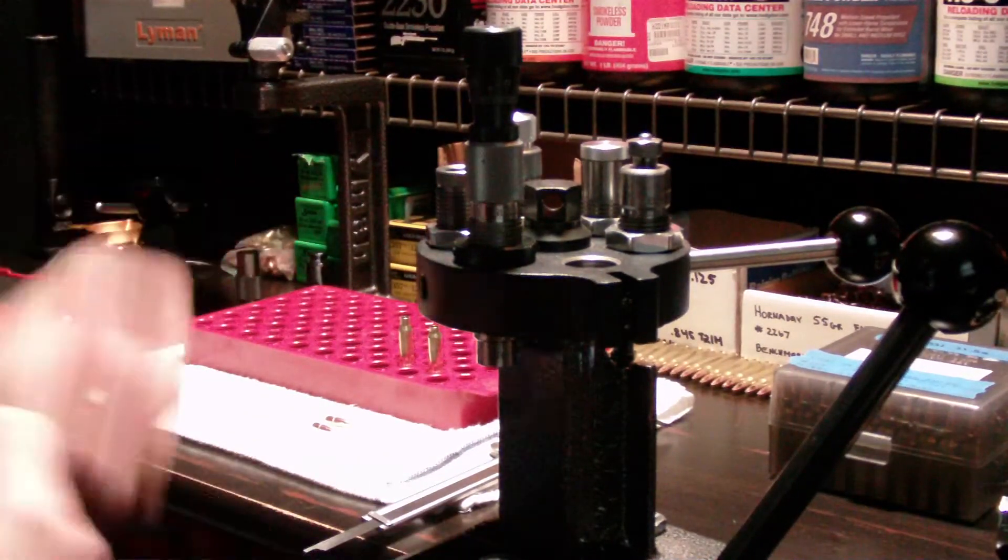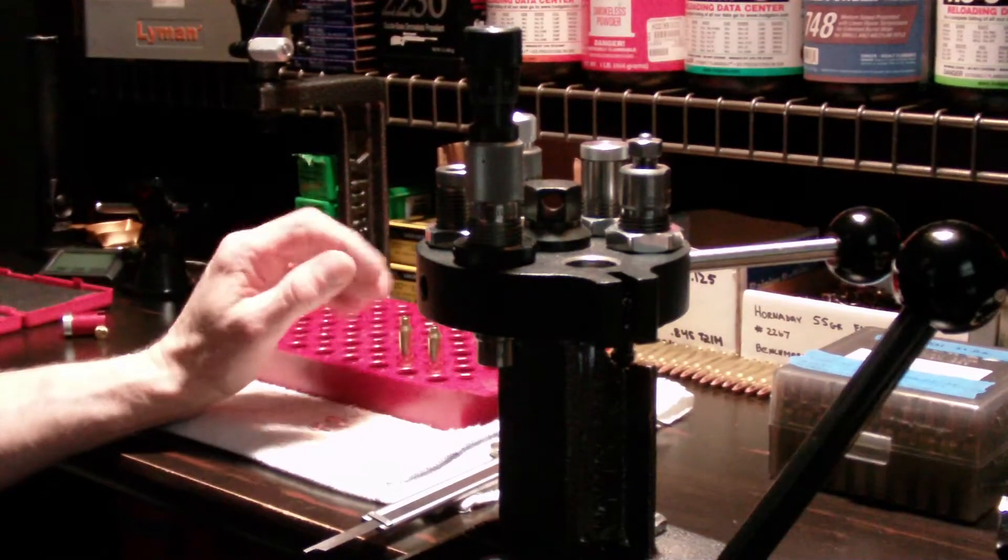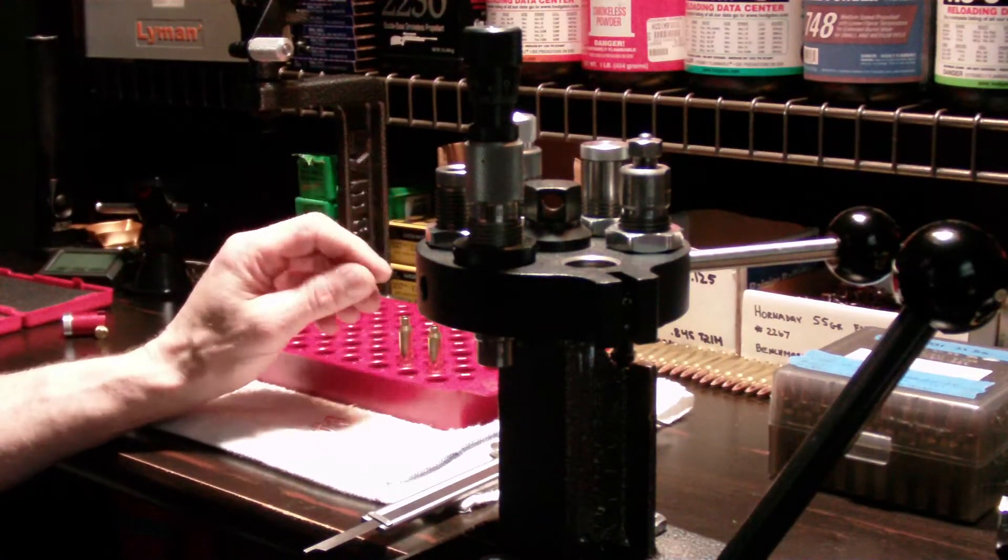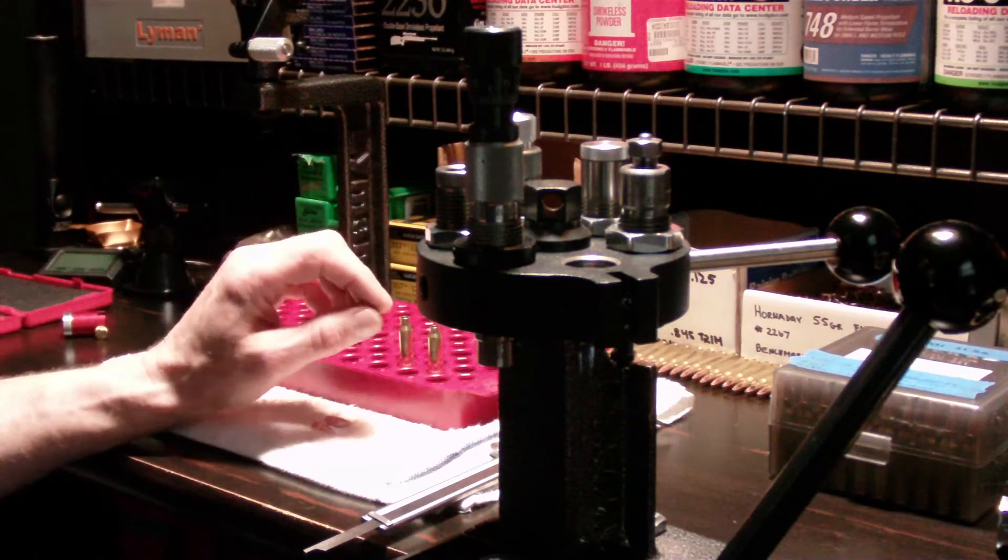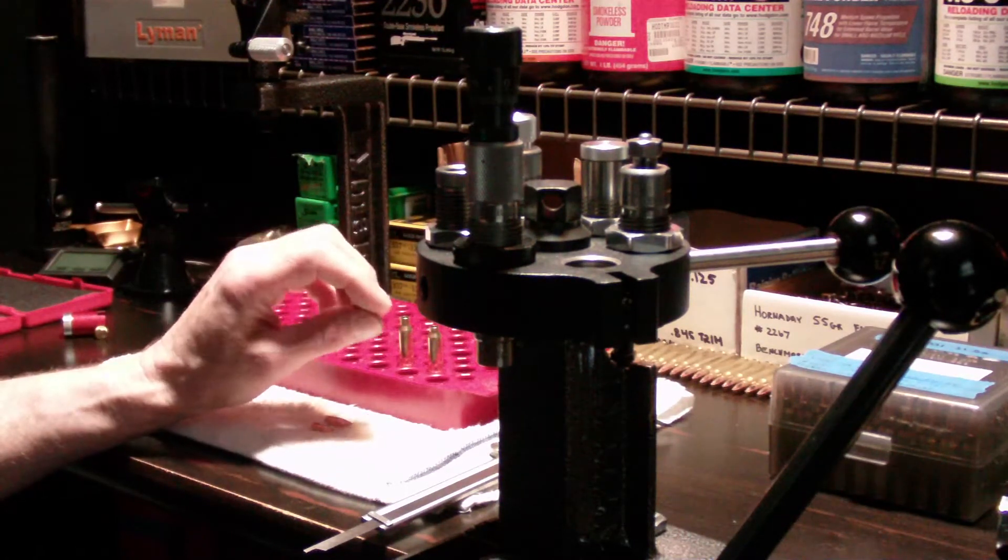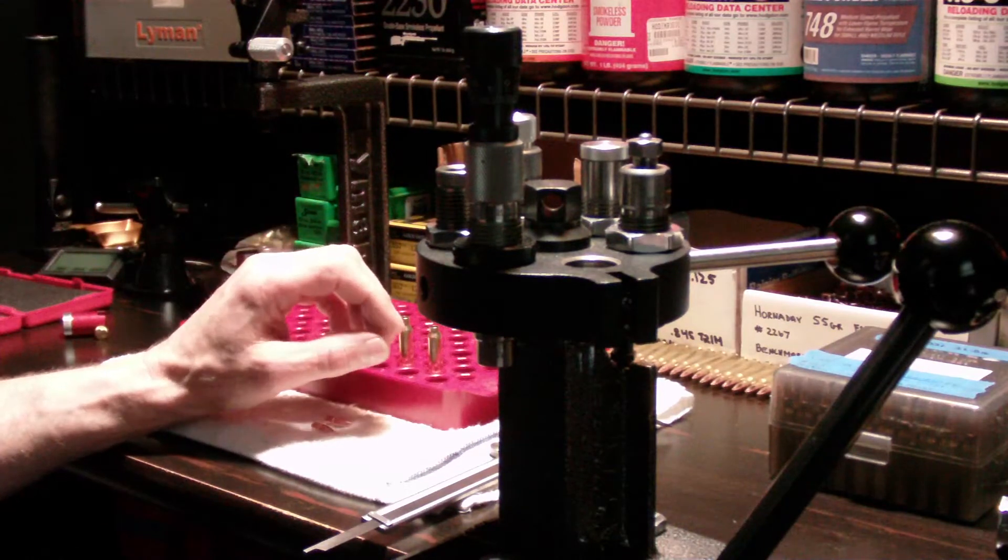The response was that because of the variance with the Dillon case gauge - you can have a couple thousandths difference in cartridges and they'll be acceptable - but because of those different lengths I was getting different overall lengths after I seated the bullet.